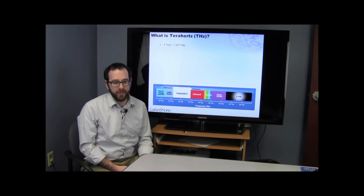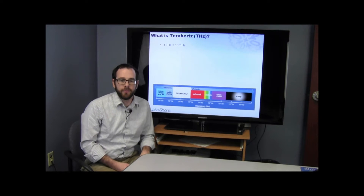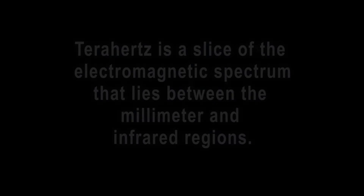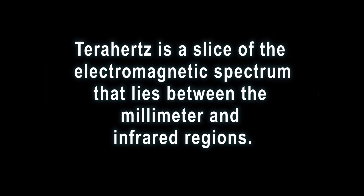We'll start today's talk by defining what exactly is terahertz. By definition, 1 terahertz is just 10 to the 12 hertz. But for our purposes, terahertz is actually just a slice of the electromagnetic spectrum that lies between the millimeter and infrared regions of the electromagnetic spectrum.